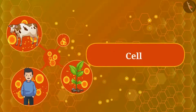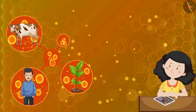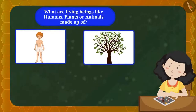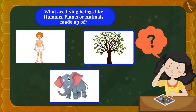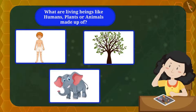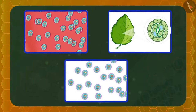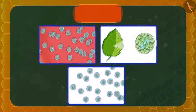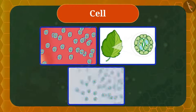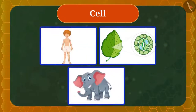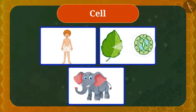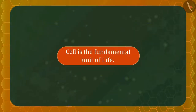Today in this video we will learn about cells. Have you ever thought what living beings like humans, plants, or animals are made up of? If we zoom into these living creatures, you can see small compartments. These compartments are called cells. All living beings are made up of cells, and the cell is the smallest unit from which all living beings are made. Cell is the fundamental unit of life.